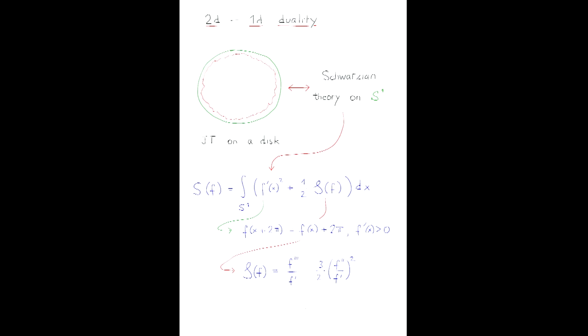There is a duality between this two-dimensional theory and a theory which is one-dimensional, called the Schwarzian theory. Our space-time is S1. Let me illustrate it by choosing a very simple geometry. We're going to revisit this geometry several times today. It's just a disk.